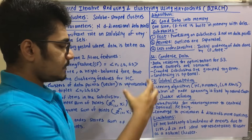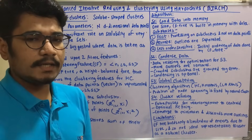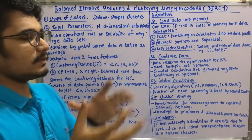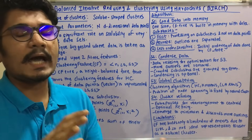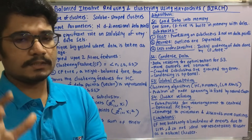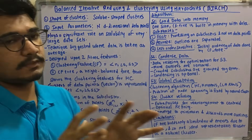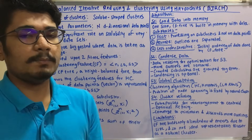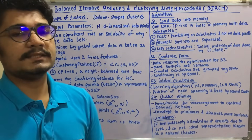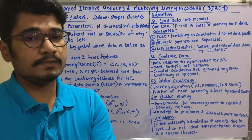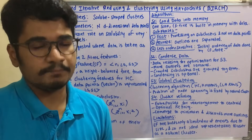BIRCH has certain limitations. The CF Tree holds only a finite number of data points due to size restrictions imposed by BIRCH. It is not considered an ideal representation technique for natural clusters, as the user cannot view BIRCH as a natural cluster due to its limited capability to hold large numbers of data entries. That covers the introduction and algorithm of the BIRCH technique in clustering for data mining. Please like, share, comment, and subscribe.